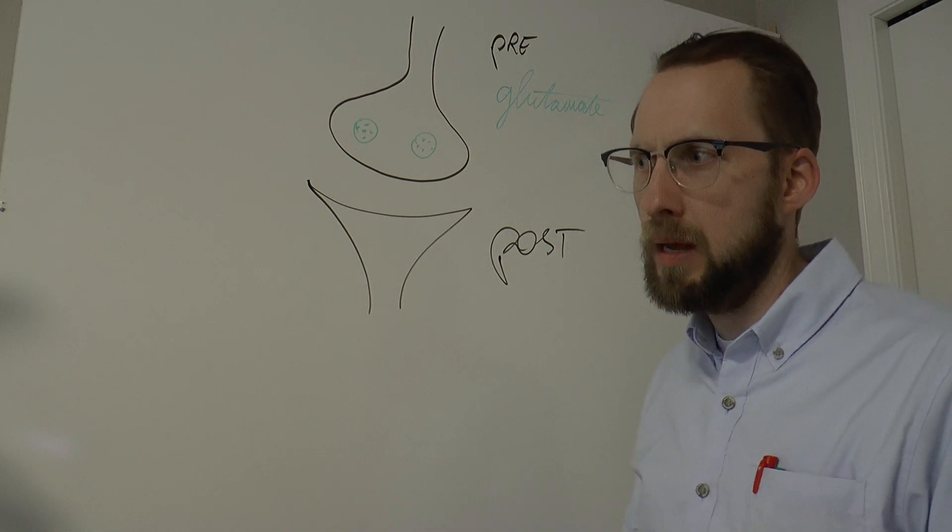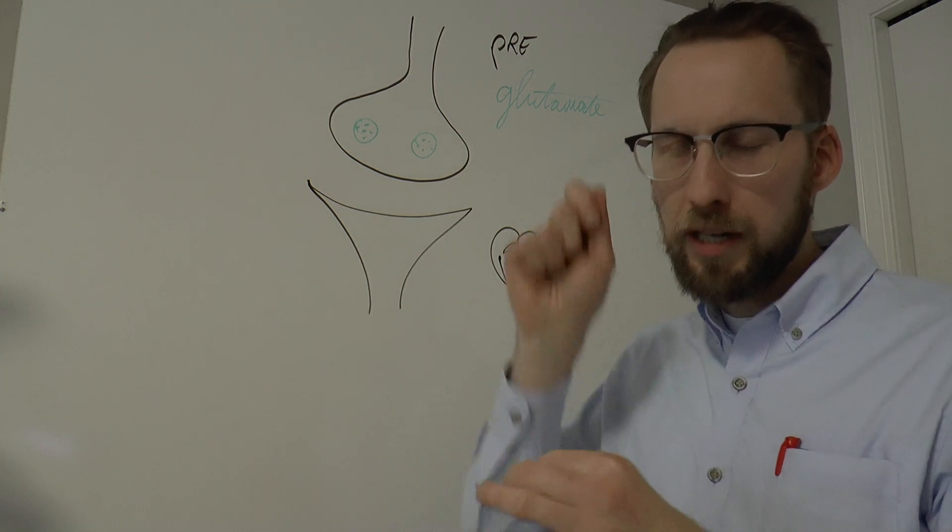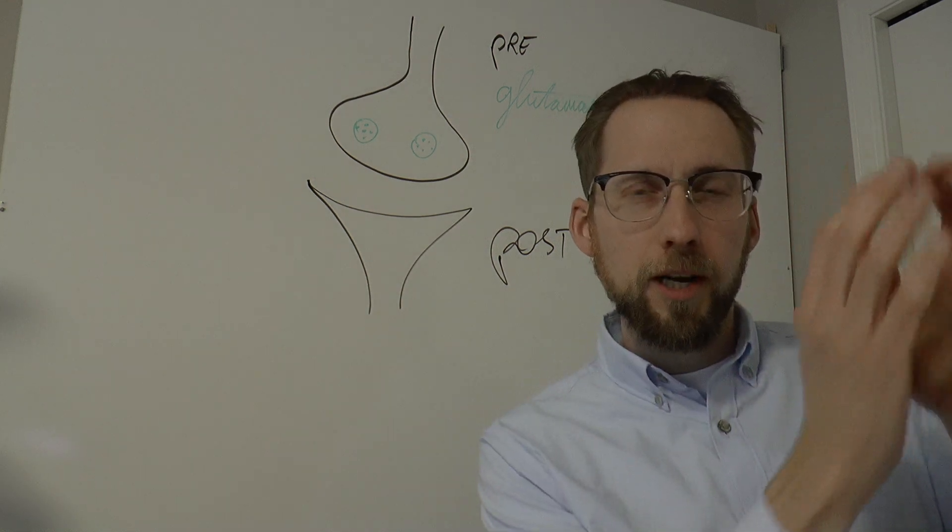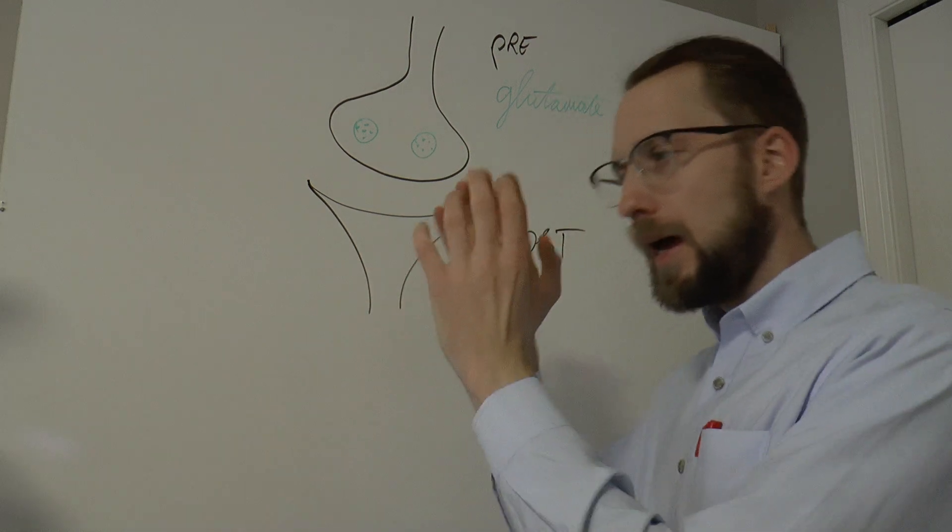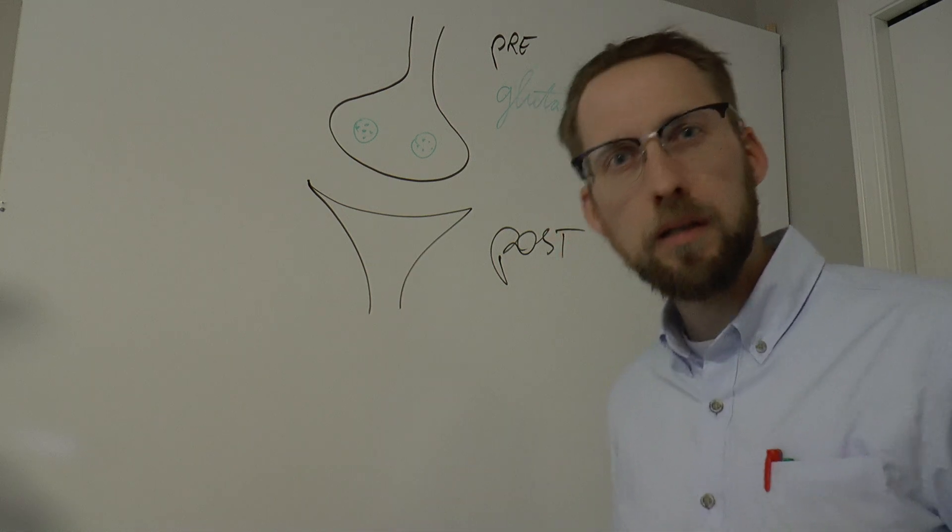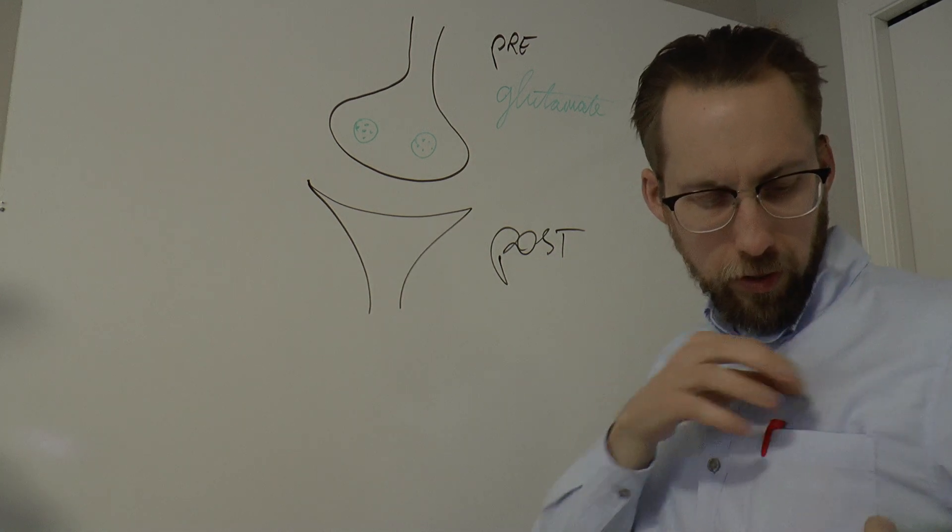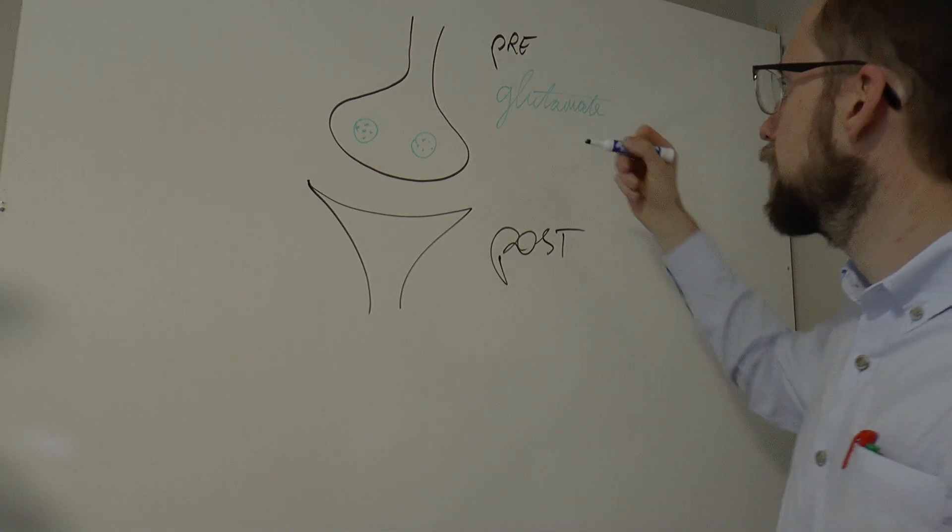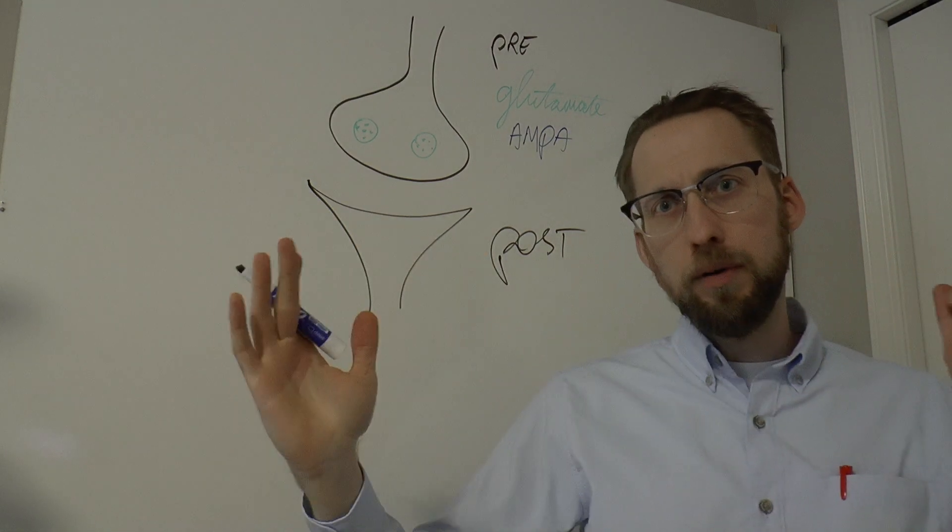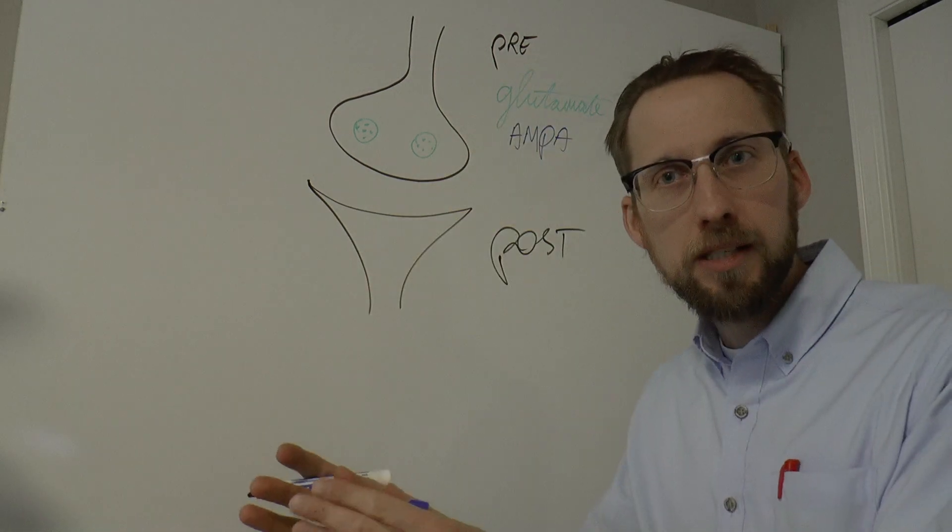Now it turns out that glutamate fits at least two different locks, and those are two different kinds of receptors. What makes them different? Well, if you inject someone with a little bit of glucose, and you attach a chemical to that, then it turns out that one type of chemical binds to one type of glutamate receptor, but not to another, and another chemical binds to that other receptor, but not to the first one. That's what makes the locks different. That's what makes the neurotransmitter receptors different.